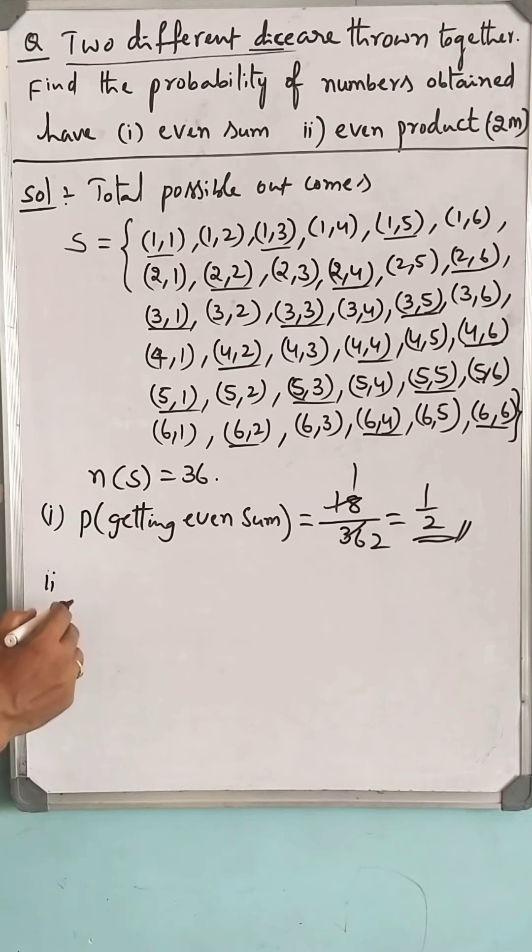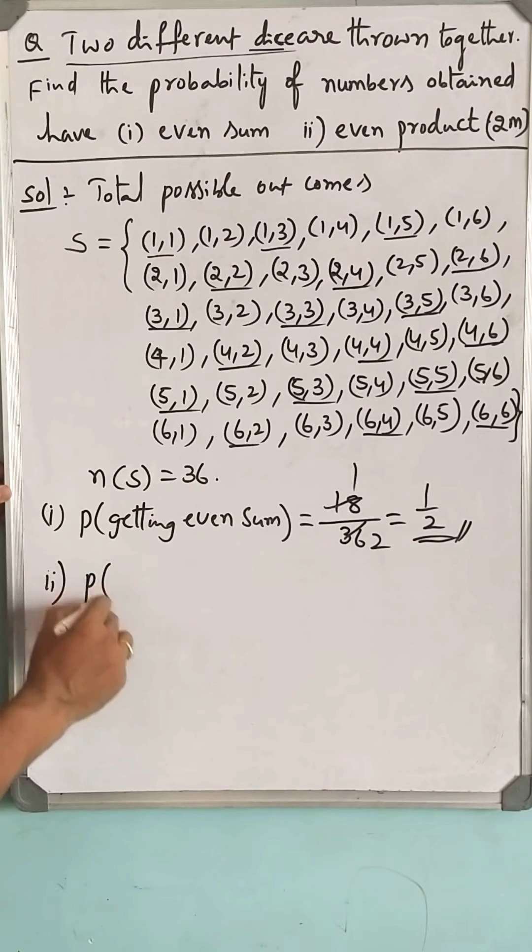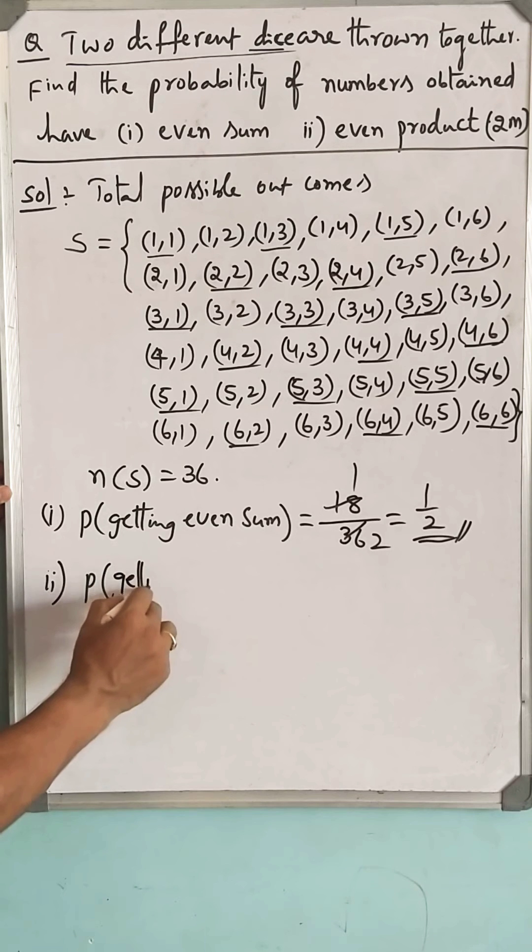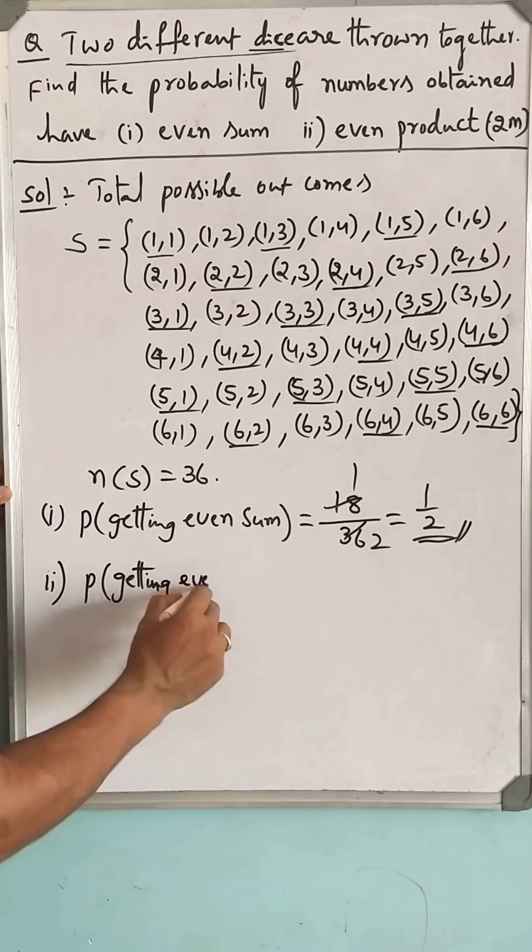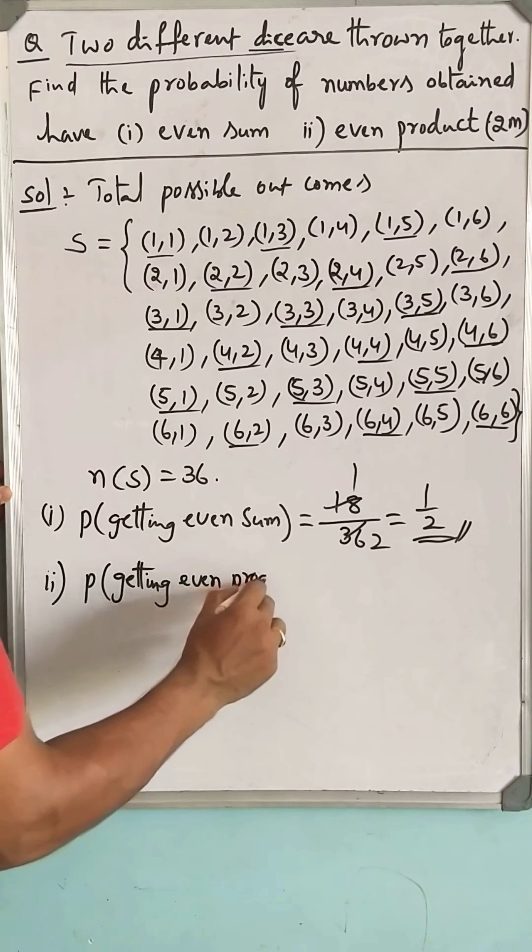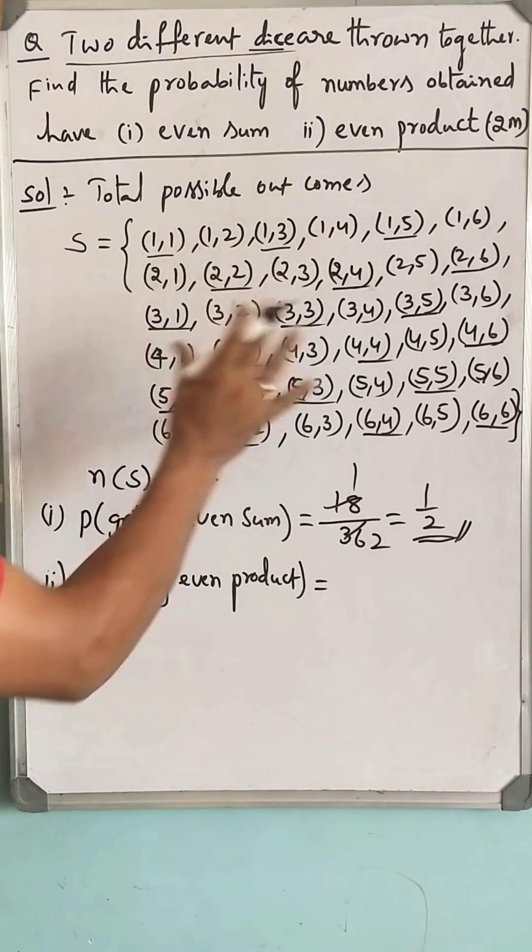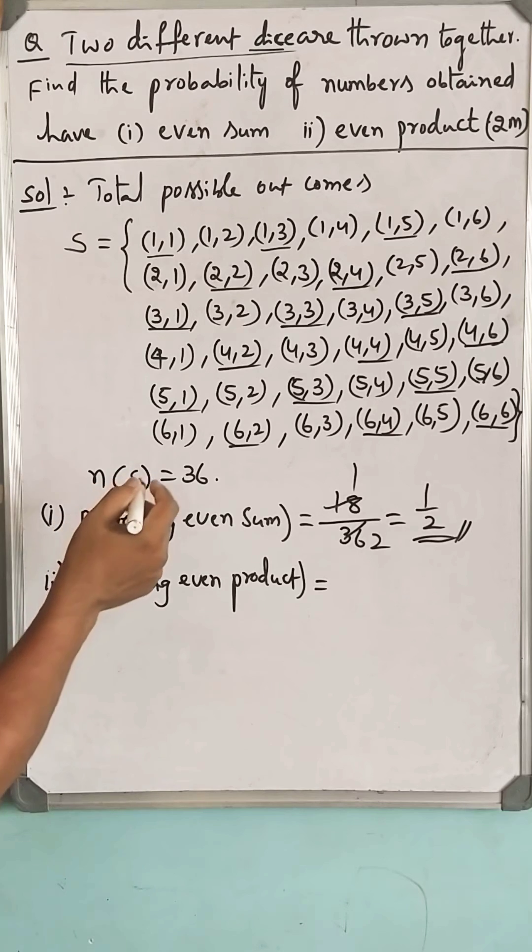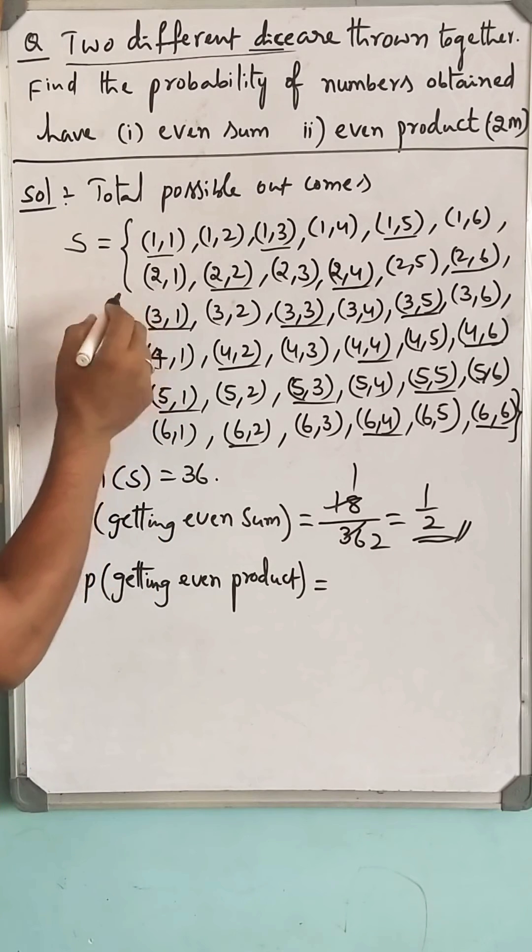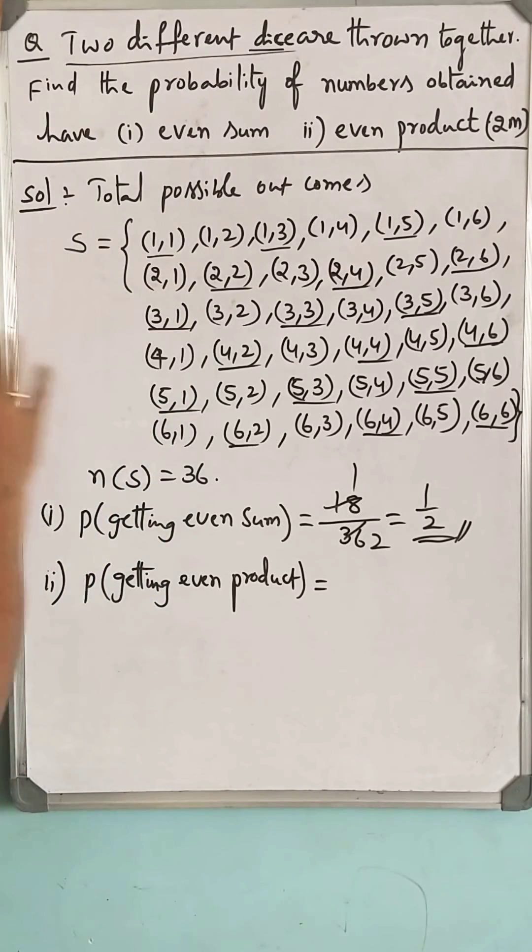Second one is probability of getting even product. Let us count how many favorable outcomes are there among these 36. You know, the multiples of even numbers are always even.